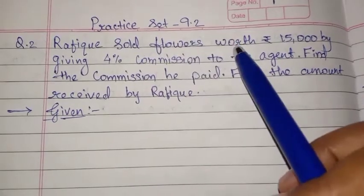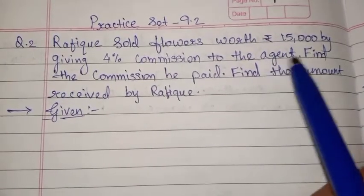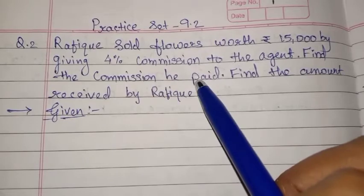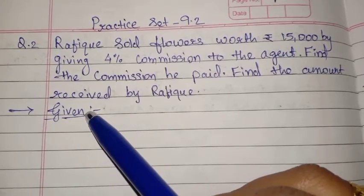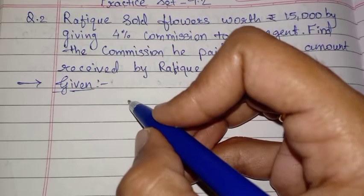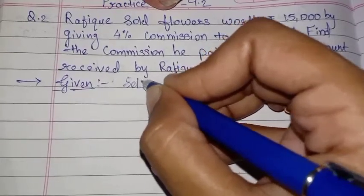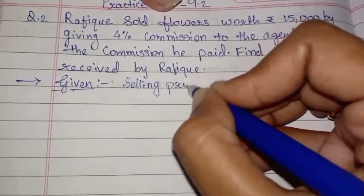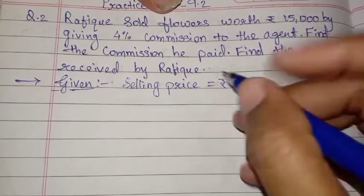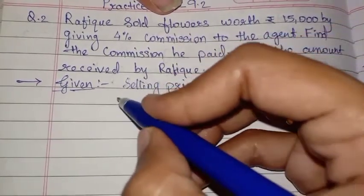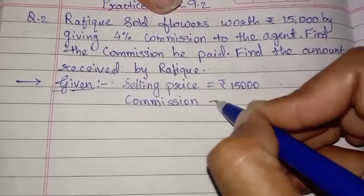Question number two: Rafik sold flowers worth rupees 15,000 by giving 4% commission to the agent. Find the commission he paid and find the amount received by Rafik. First, write down the given things. Selling price = rupees 15,000. Commission rate = 4%.